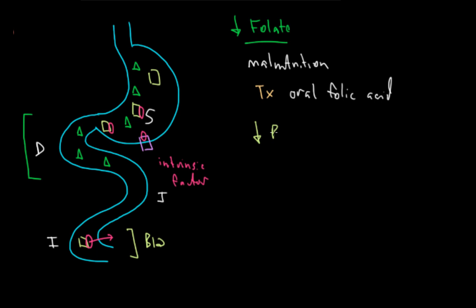A B12 deficiency, on the other hand, is a little bit different. We have a large amount of B12 stores in our body, so it takes a lot longer to onset. And because B12 is absorbed with intrinsic factor, we have one extra step through which we can get a problem. So anything that interrupts B12 absorption is going to affect the amount of B12 in our bodies.